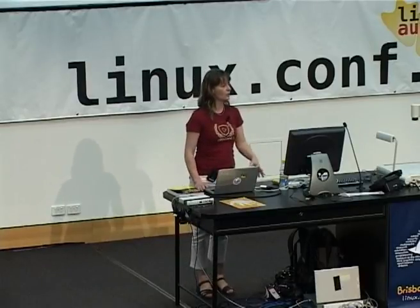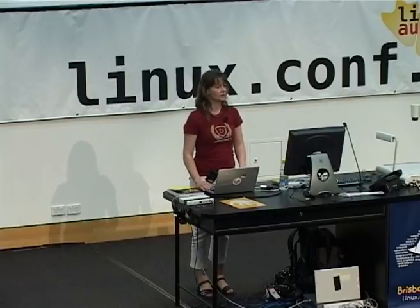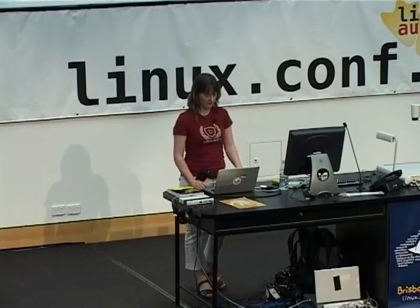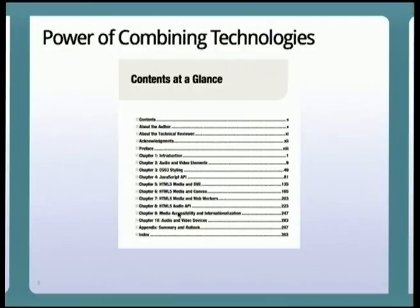HTML5 is a new audio and a new video tag — HTML5 media. But it's not just that really. It's a combination of technologies. This is the table of contents of my book. I've got CSS3, JavaScript, media and SVG, media and canvas, media and web workers, the audio API in two different versions, and media accessibility and internationalization, and finally audio and video devices.